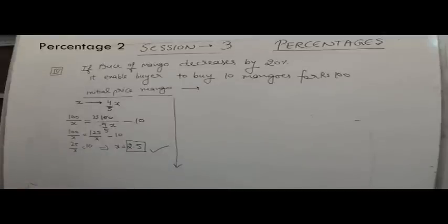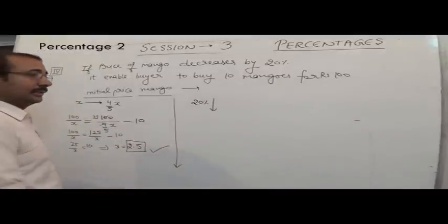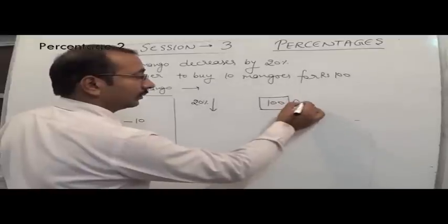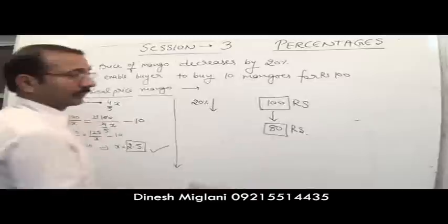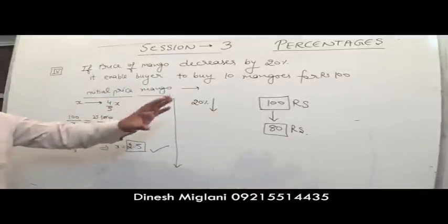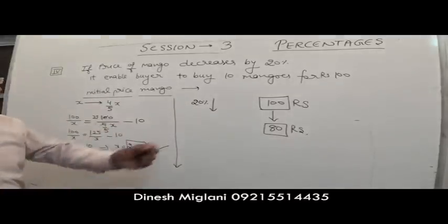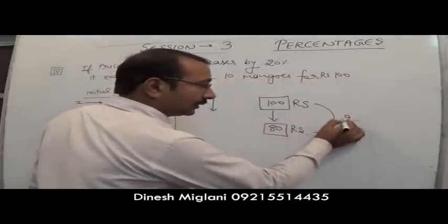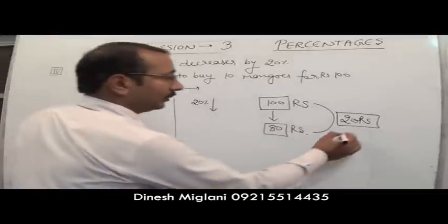There is a different approach. The price decreases by 20%, so the number of mangoes we buy for ₹100 earlier — now for the same quantity, we only need to spend ₹80. So if we spent ₹100 earlier, now the same quantity costs ₹80. The change in money is ₹20, and because of that change we can buy 10 more mangoes.